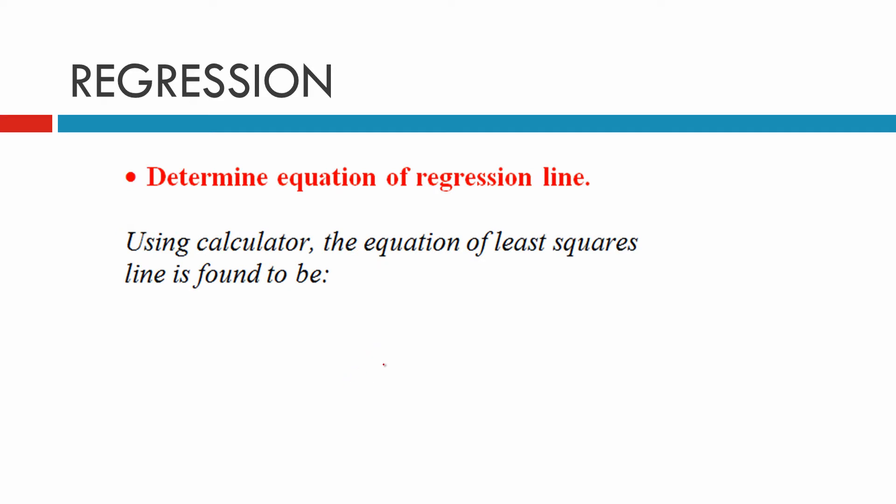The next thing to do is determine the equation of the regression line. Again, we use the calculator to do this. The equation of the regression line is y equals 105.4 minus 1.44x. Of course we need to change these values. It's not y or x. We have life expectancy, we'll put capital LE for life expectancy equals 105.4 minus 1.44 times capital BR for birth rate. Just saves us writing all that down.